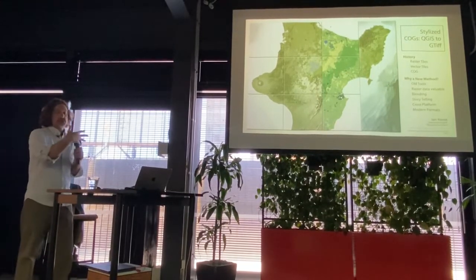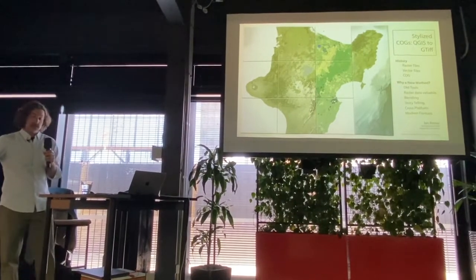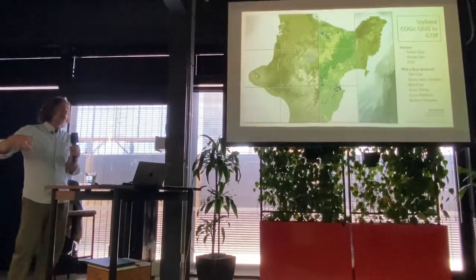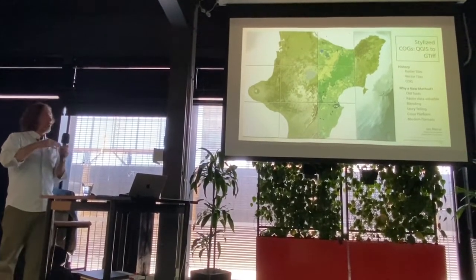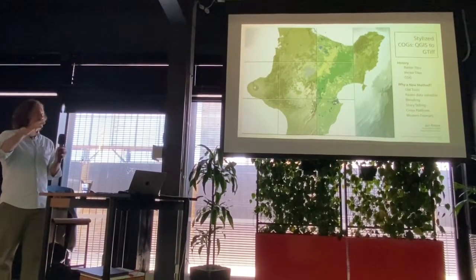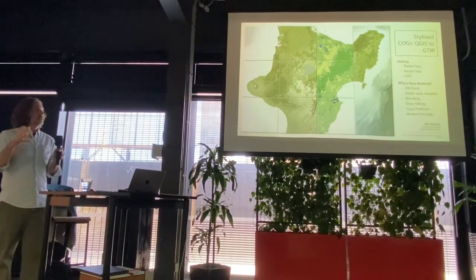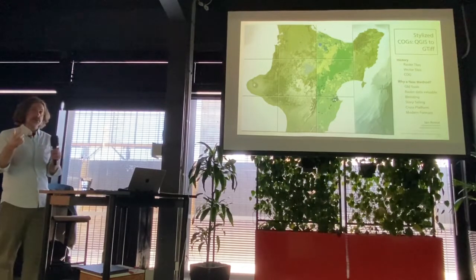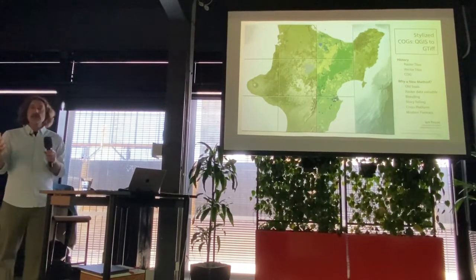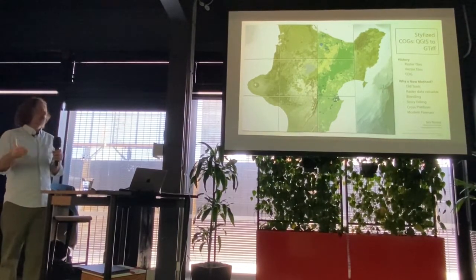Vector tiles came along; they sped things up. They take all your vector data, chop it up into little tiles, and serve those raw tiles to the client. The client does all the heavy lifting — all the colorization, widths, everything. They're very fast to render and highly compressible, so they're easy to serve over the web because they're so tiny.